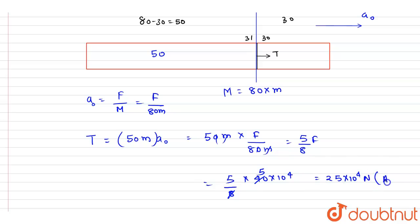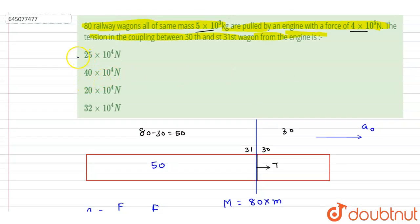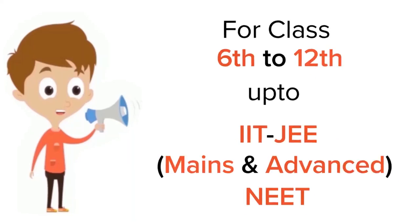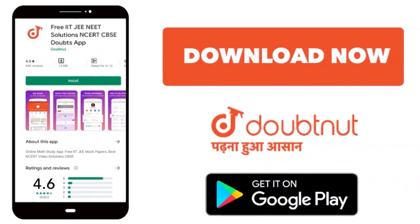And you will get the tension is equal to 25 × 10⁴ Newton, and this is the answer of this question. Now you can check for the option, 25 × 10⁴ A is the correct one. Thank you. For class 6 to 12, IIT, JEE and NEET level, trusted by more than 5 crore students. Download Doubtnet app today.